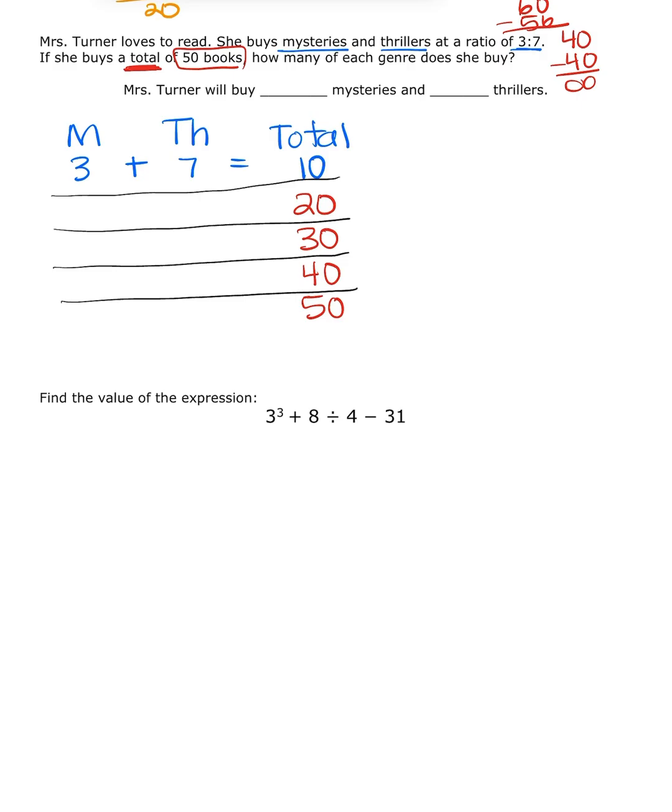And now, I can answer the question. It says, how many of each genre does she buy? So, it says, how many mysteries does she buy? So, let's skip count the mysteries. Well, mysteries was my M here. So, I'm going to skip count all the way down until I get to this total level of 50. So, I have 3, 6, 9, 12, 15. So, how many mysteries? 15.